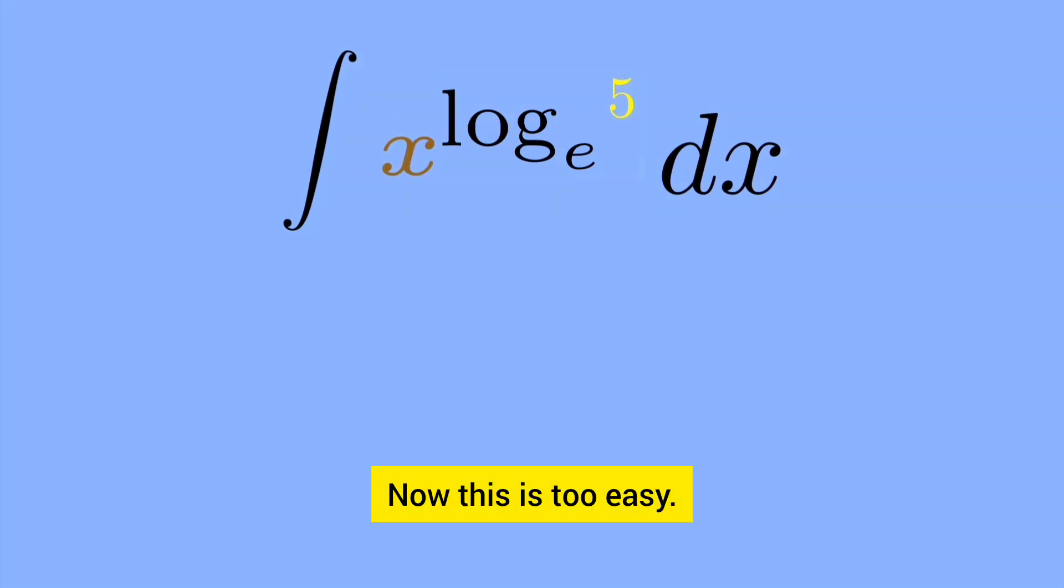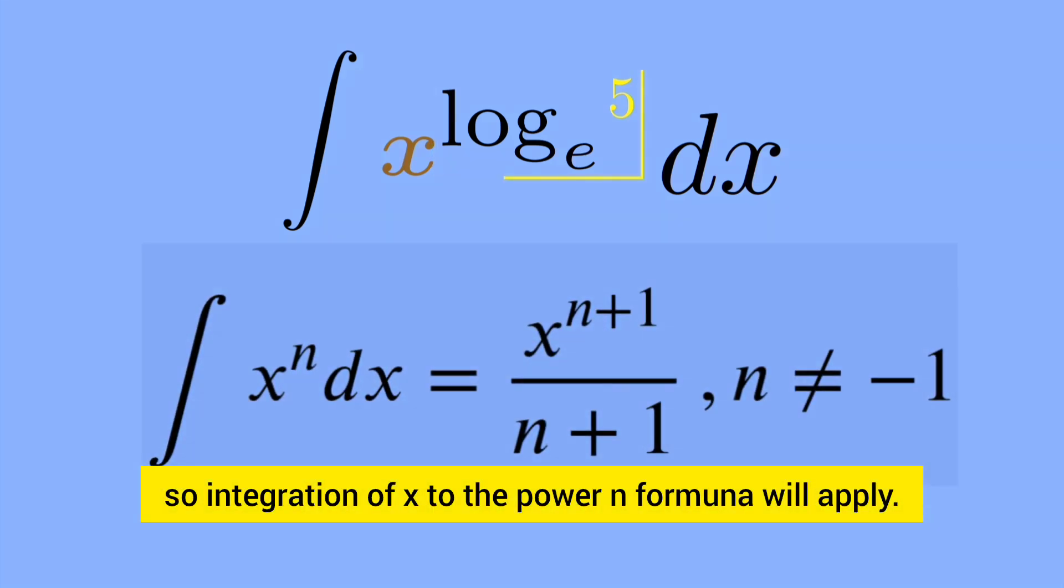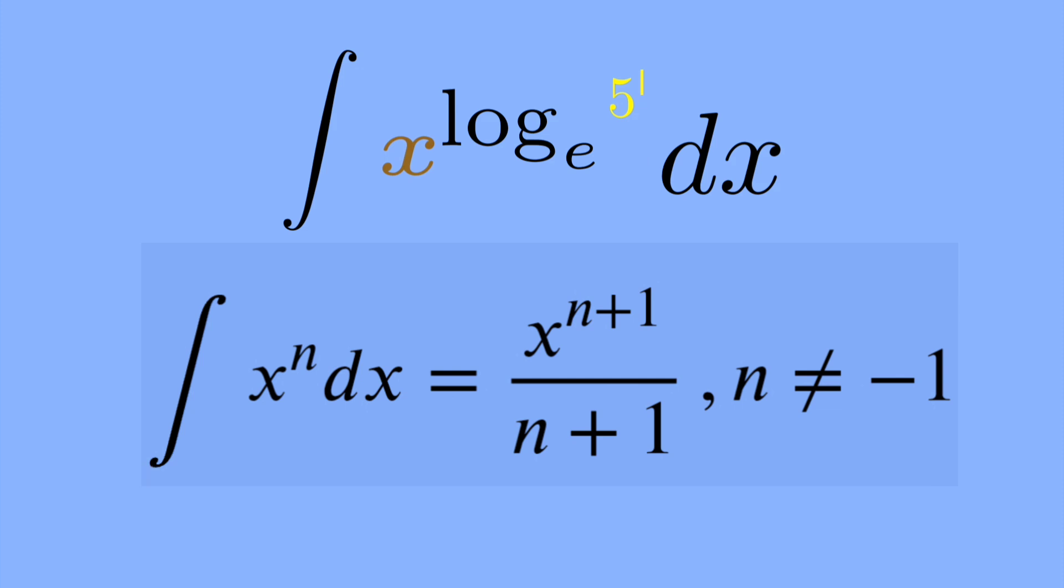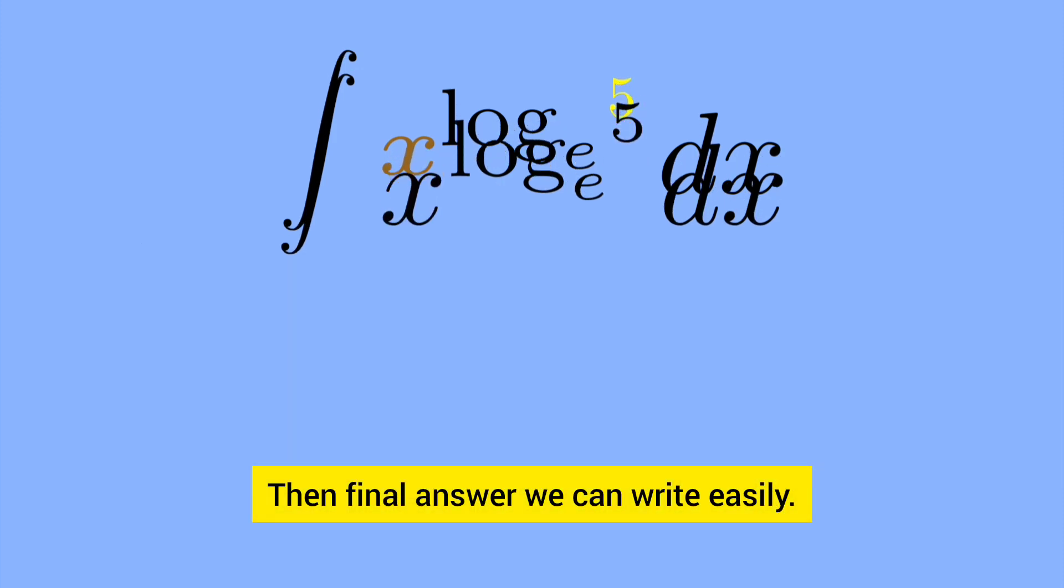Now this is too easy. x to the power log 5 is constant. So integration of x to the power n formula will apply. Then we can write the final answer easily.